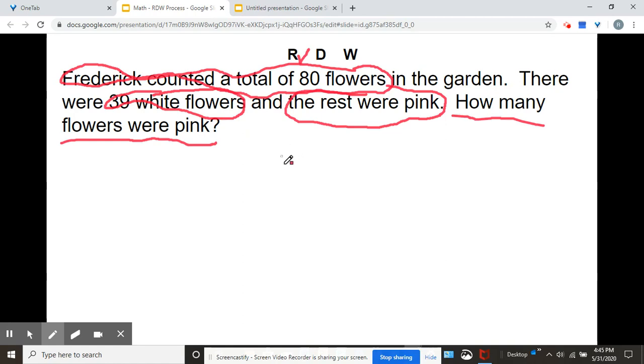Now I can draw 80 circles to represent flowers, but I'm going to teach you another way to do this. I'm going to teach you how to draw a tape diagram. So a tape diagram would look like this. I know he counted a total of 80 flowers. So I'm going to put 80 up here. And 39 of it was what? White. And I'm going to label W for white. And it says here the rest were pink. I don't know how many were pink, so I'm going to put a question mark. And I'm going to label that P for pink. So 80 is what Frederick counted. That is the whole. I could put C up here for what he counted.